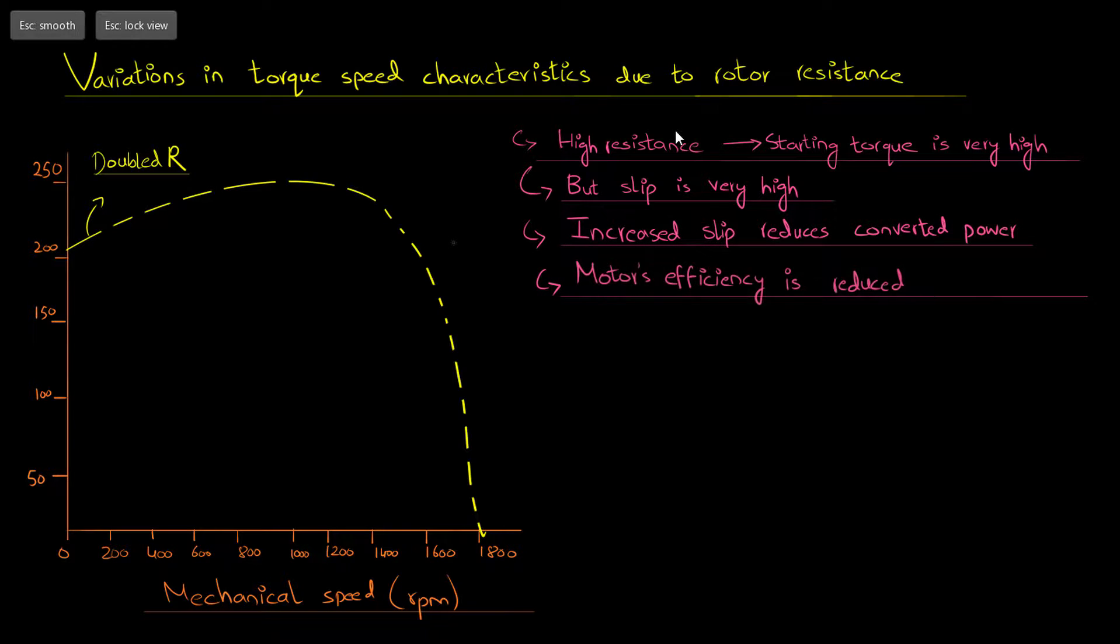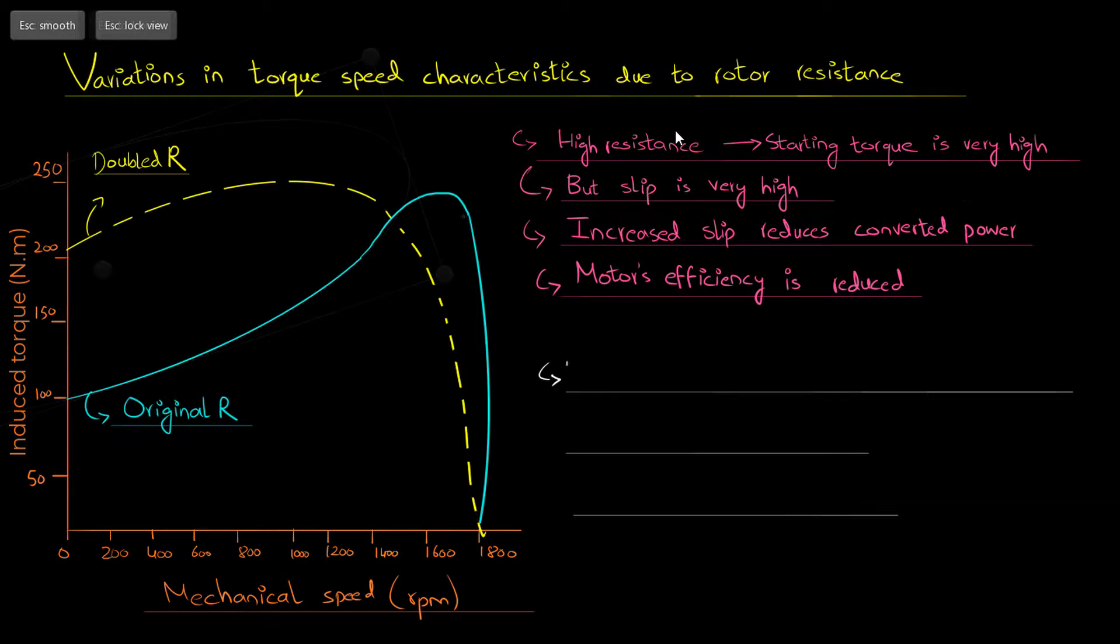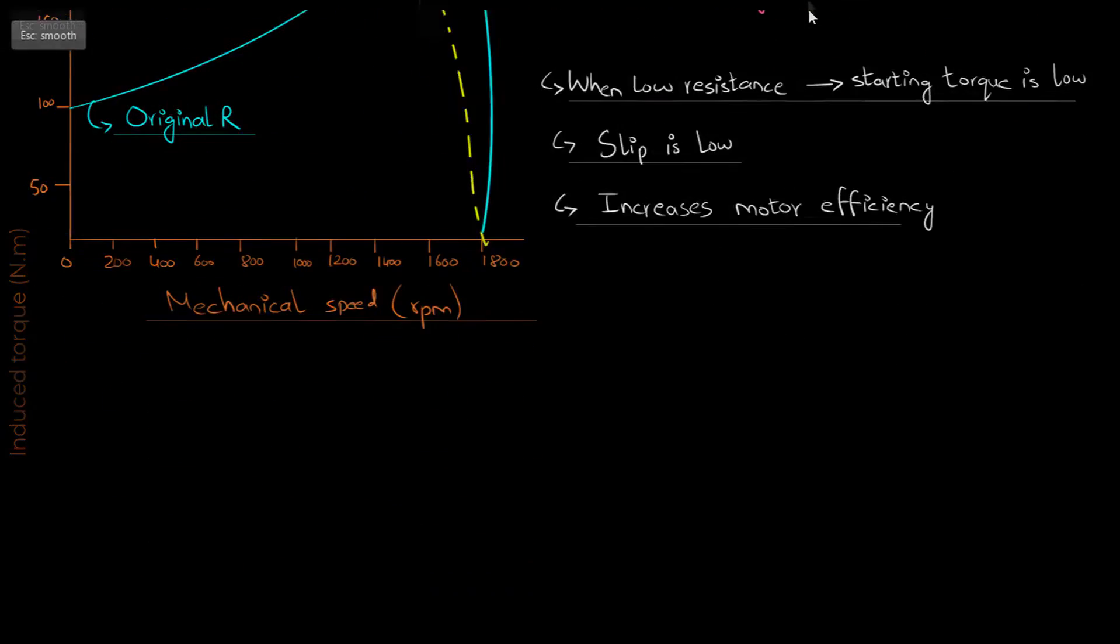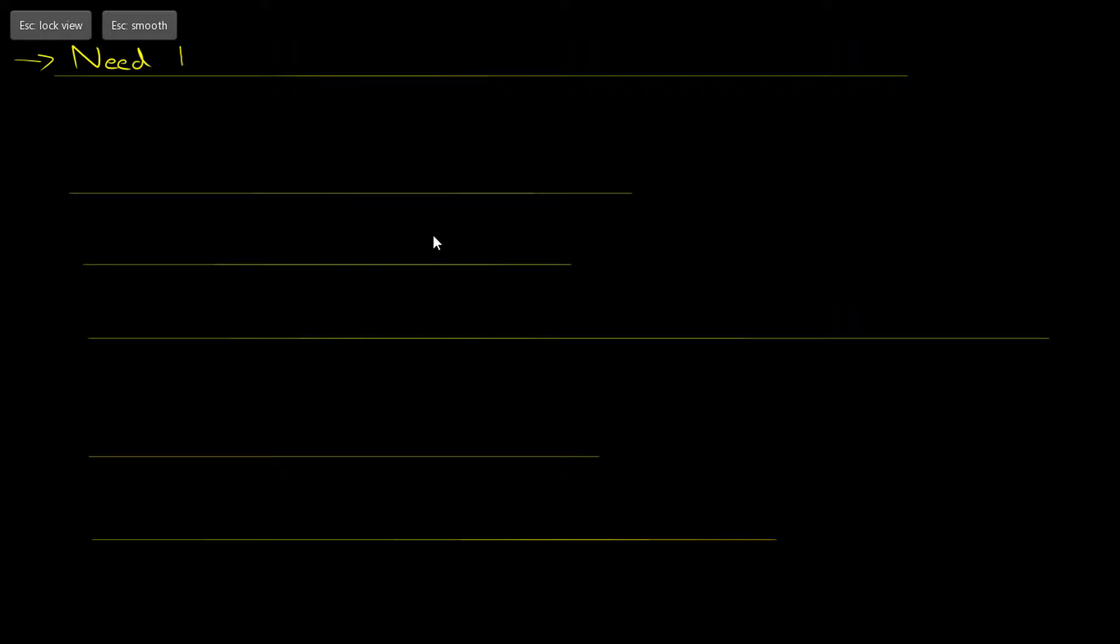Opposite to this scenario, when the rotor is designed with a low resistance, then the motor's starting torque is low and the slip is also low in normal operating conditions, which increases the motor's efficiency. Both of these scenarios are illustrated in this figure.